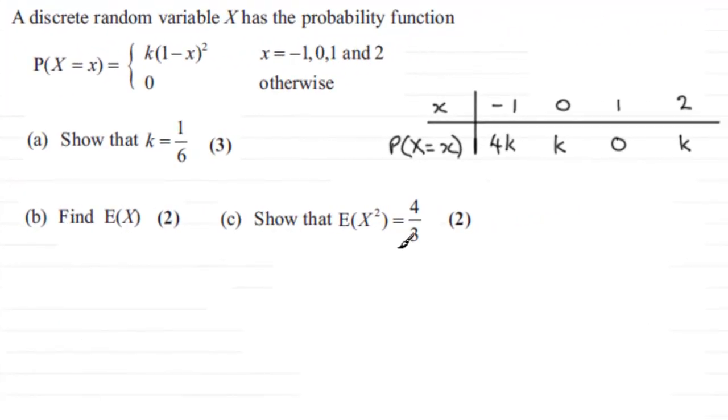Now for parts B and C of this question, we've got to find E of X and show that E of X squared equals 4 thirds for this random variable X which has this probability function.